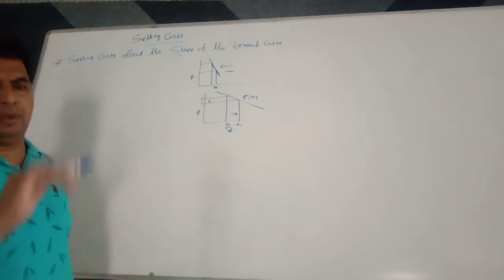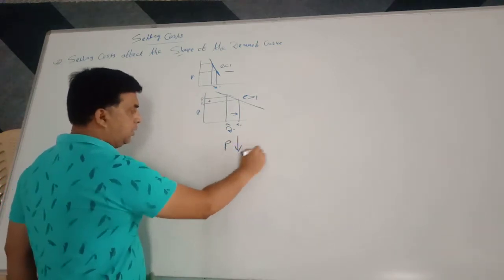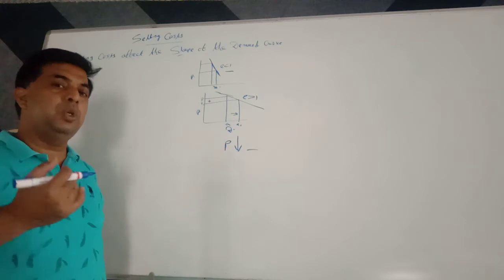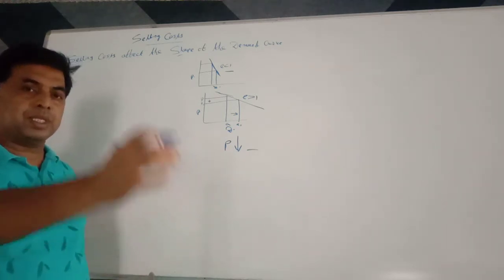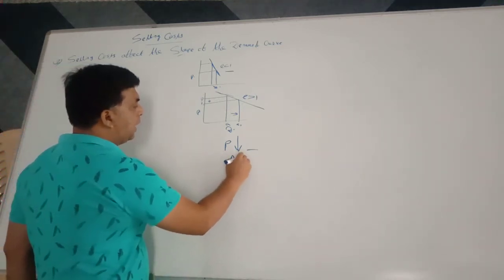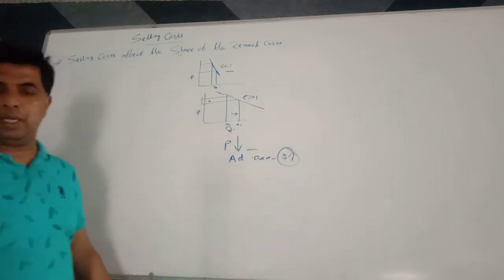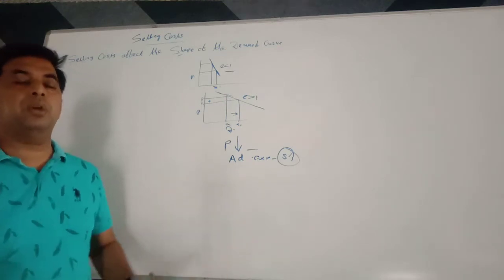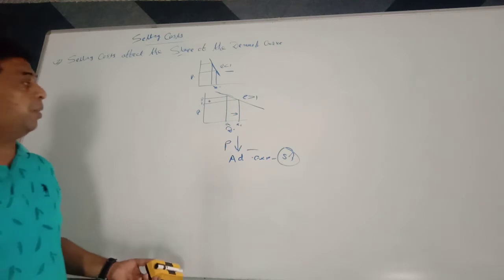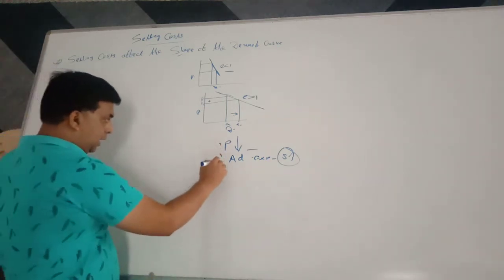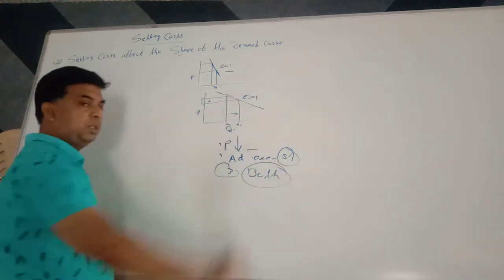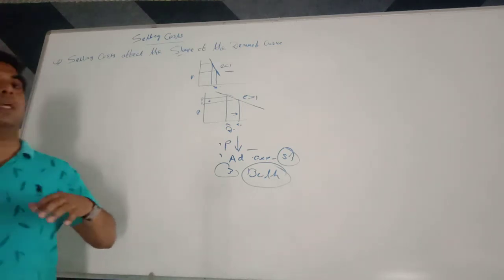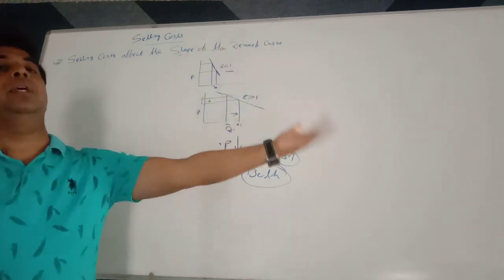How can you influence demand for the product or sales of the firm? First, by reducing price — there is an inverse relationship between price and demand, so by reducing price you can increase demand. Second, you increase advertising expenditure or selling cost. Third, you use both together — you not only reduce price but also incur advertising expenditure and selling cost in order to increase sales.